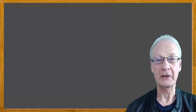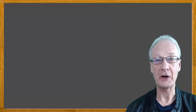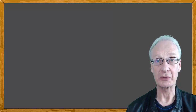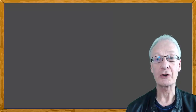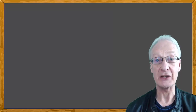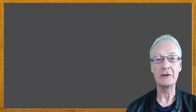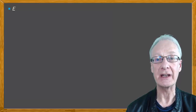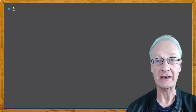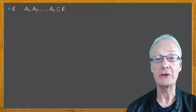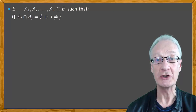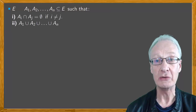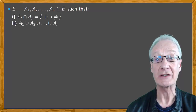Suppose that we have a population and that it's divided into different parts. For example, it might be a nation that's divided into regions or provinces, or a group of people that's divided by age range. In mathematics, we can model a situation like this by a set E that's partitioned into a series of subsets A1, A2, and so on up to An, such that they're 2 by 2 disjoint — in other words, they have no common elements — and the union of these subsets is the total set.